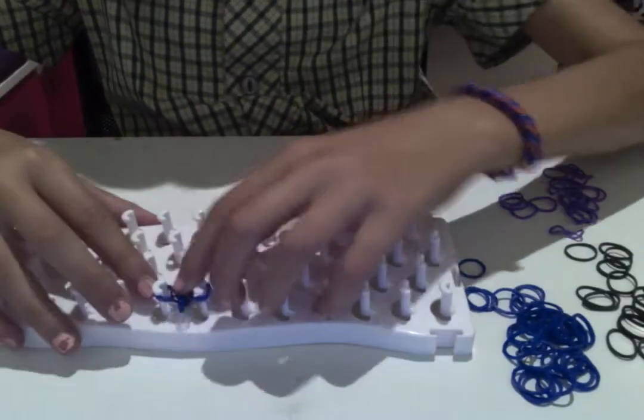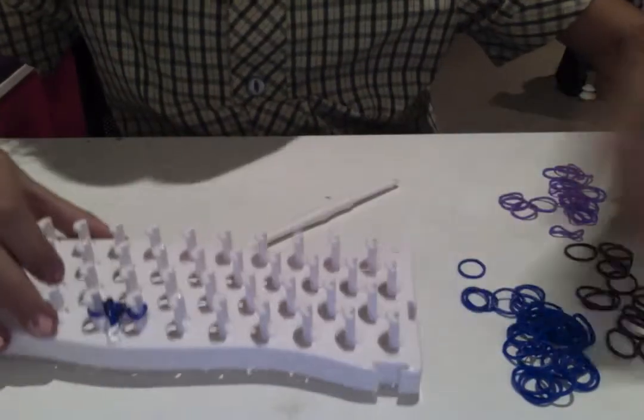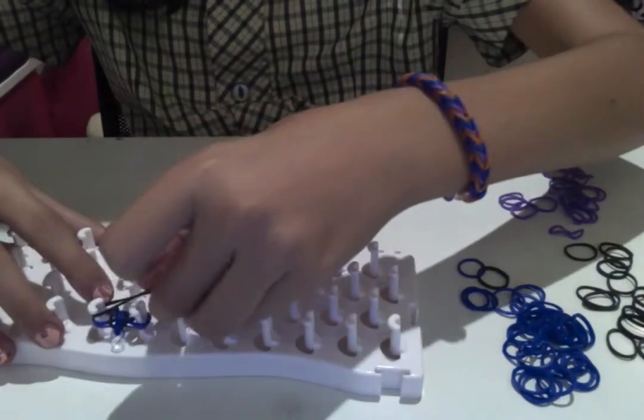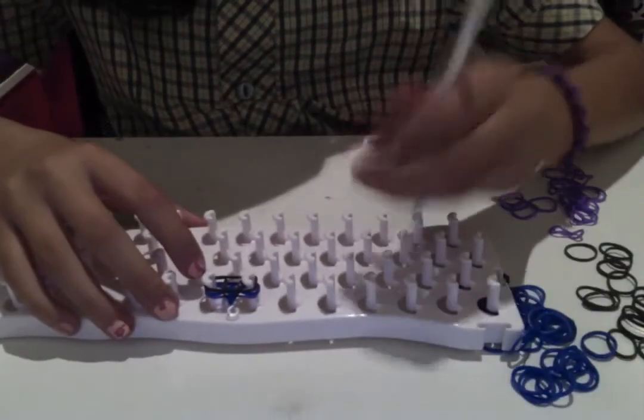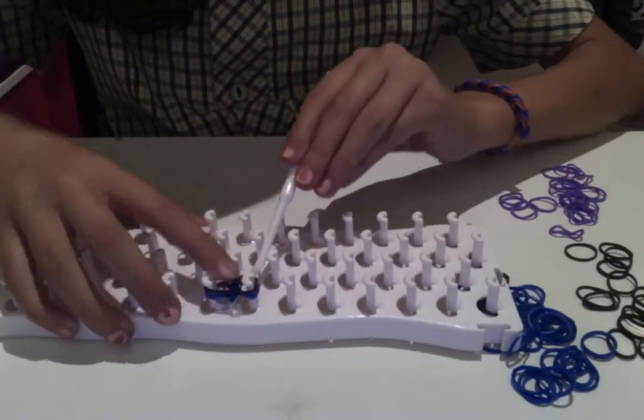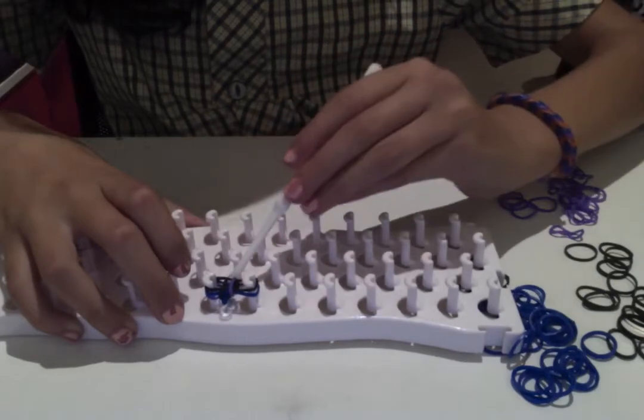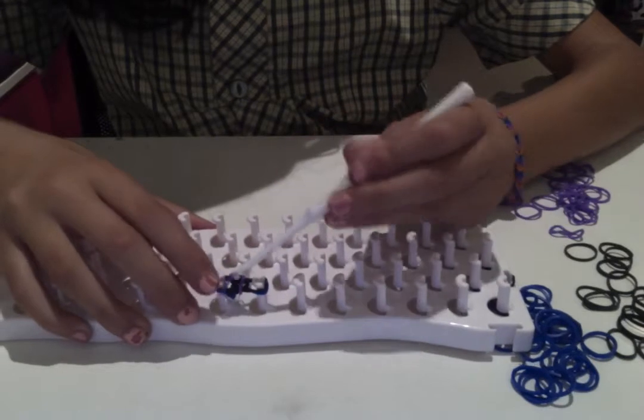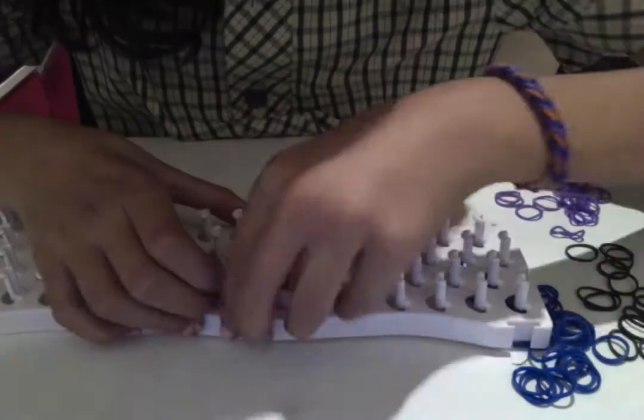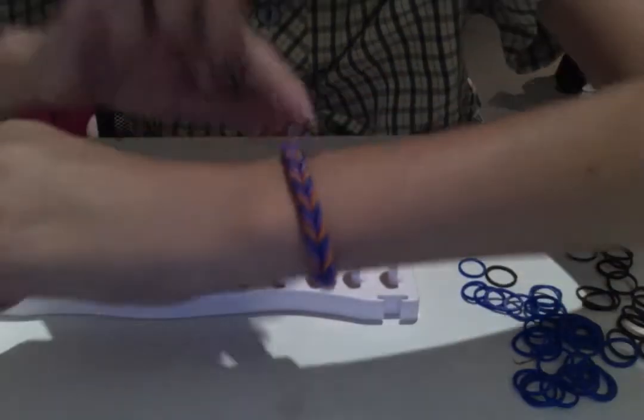And then see again how the black is there? You would remember to put the black back on, just like that. And then again with the purple, you put that over like this. It's turning out a little bit like this, like fishtail braid.